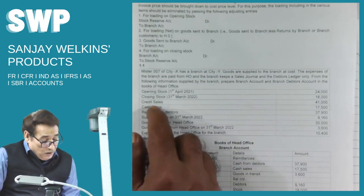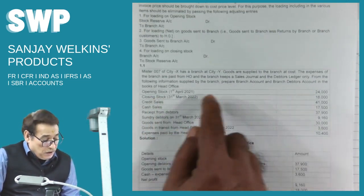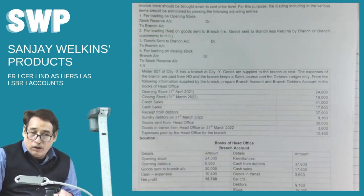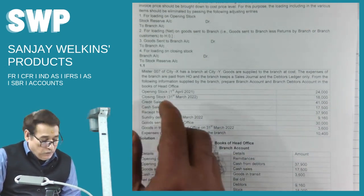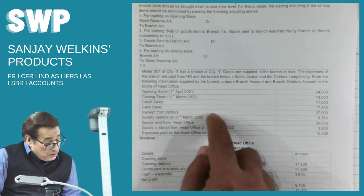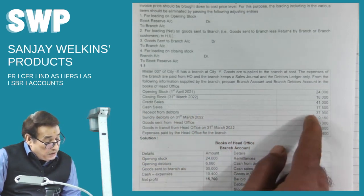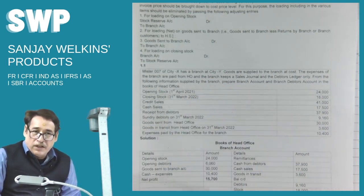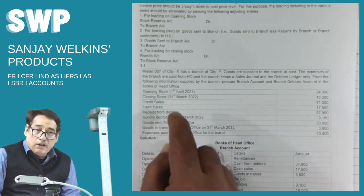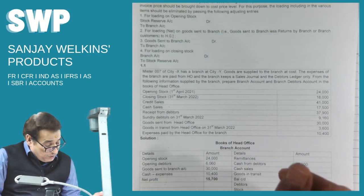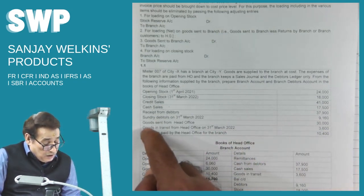We have to adopt the debtors system. The information given: opening stock on 1st April 2021 is 24,000 and closing stock is also given. Credit sales is given — credit sales is a transaction between the branch and branch debtors, so it will not come in the branch account, only in the debtors account. Cash sales will be written towards the credit side of the branch account. Receipts from debtors is 37,900. Sunday debtors closing balance is 9,160 and goods sent from head office is 30,000.